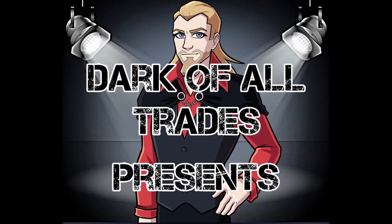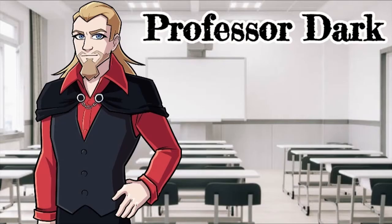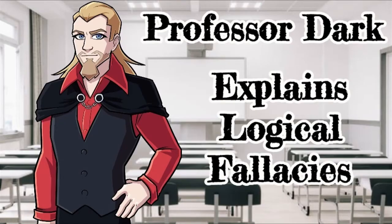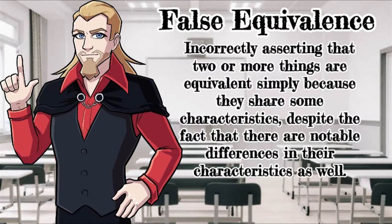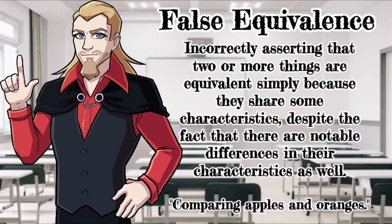Dark of All Trades presents Professor Dark Explains Logical Fallacies: False Equivalence. False Equivalence is incorrectly asserting that two or more things are equivalent simply because they share some characteristics, despite the fact that there are notable differences in their characteristics as well. This is colloquially stated as comparing apples and oranges.